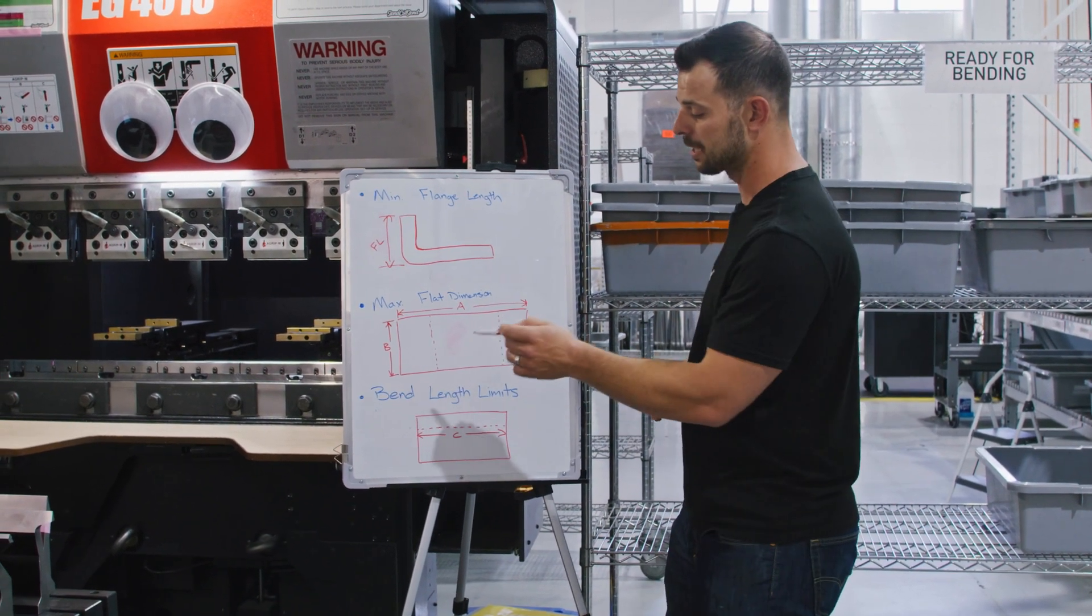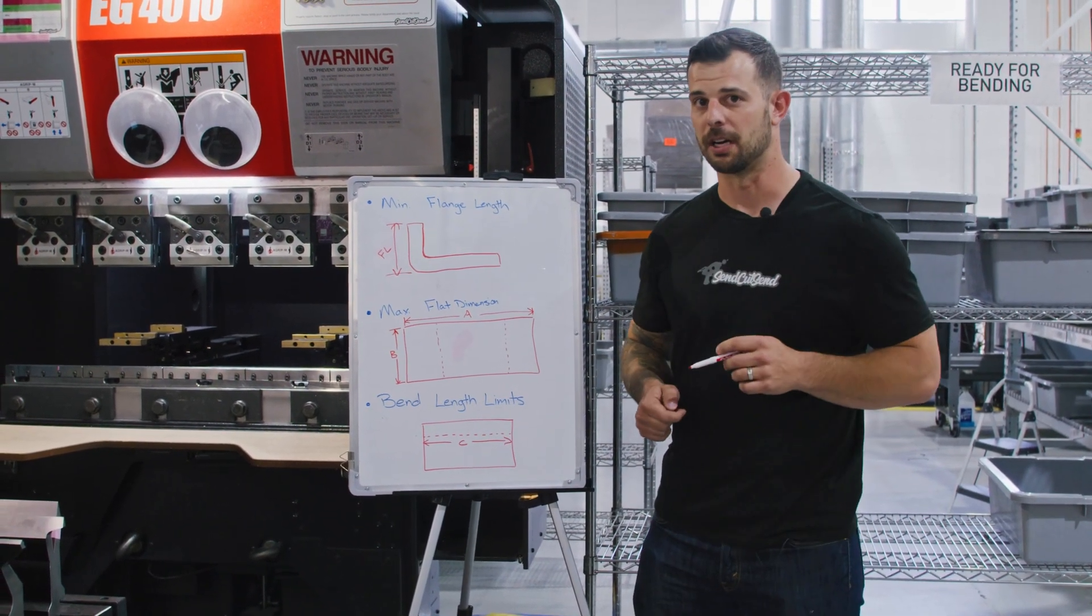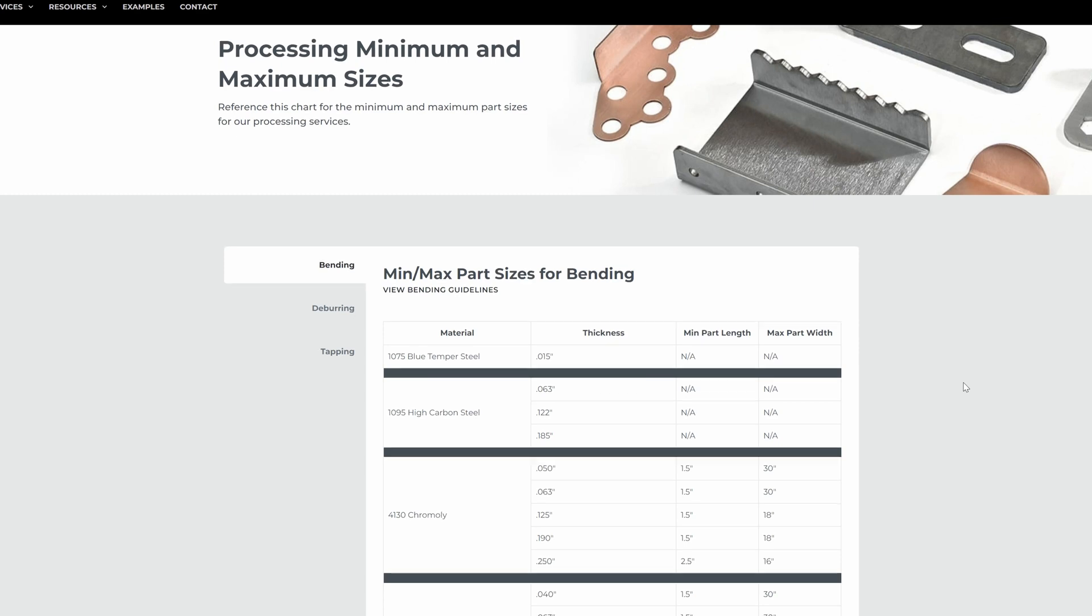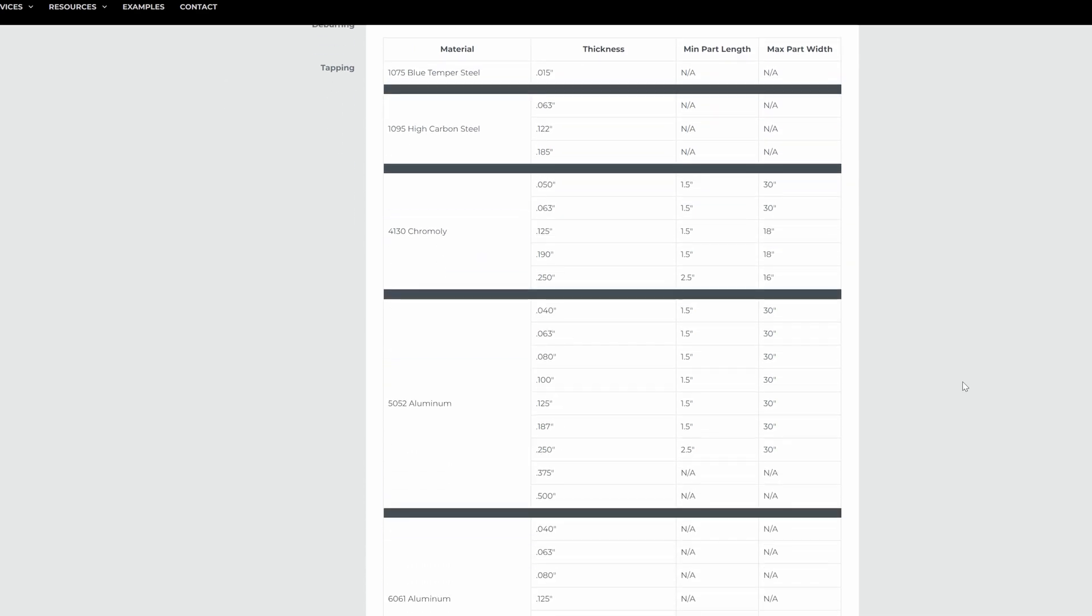Lastly, let's talk about the max bend length limits for your part. So as an example, 4130, if it's a quarter inch thick, we have a bend length of 16 inches. All the other materials are in our material guidelines on our website.